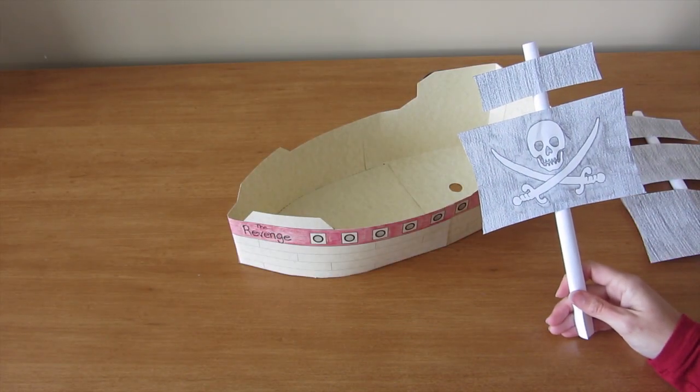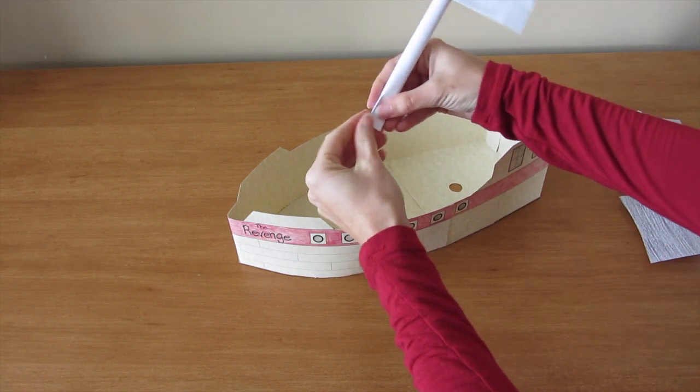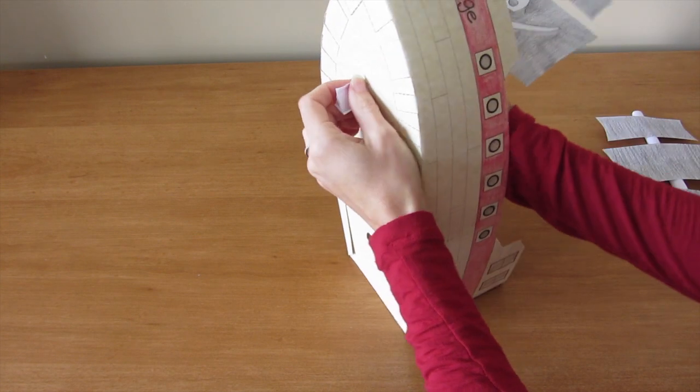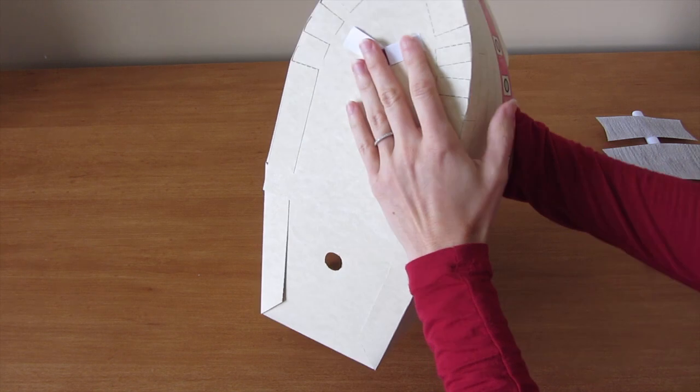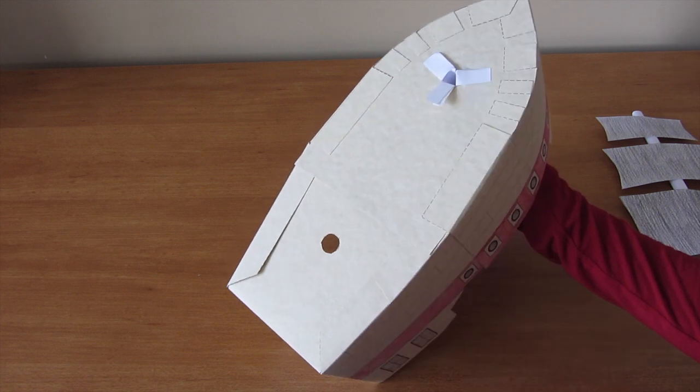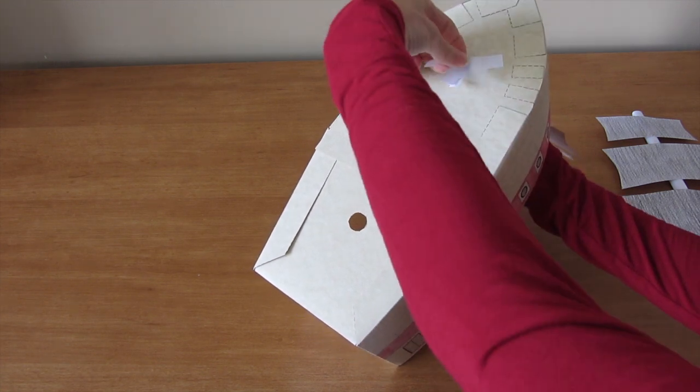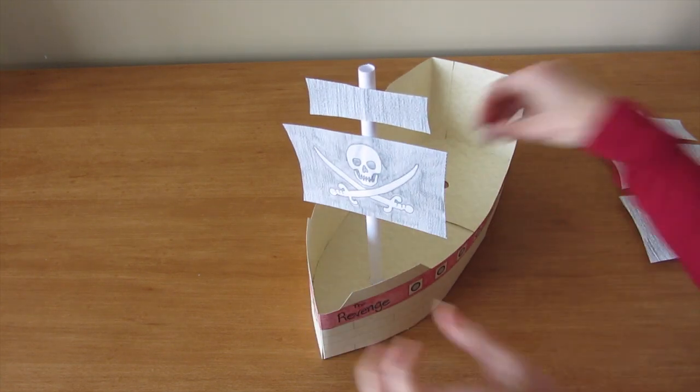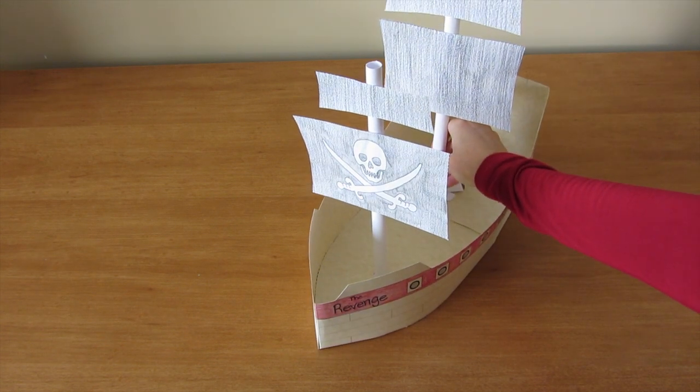The last item of business here is to attach the masts. I'm going to start with the foremast. Push these pieces back together and thread them through the hole that you made in the base of the ship. Then open them back up again and place some tape over each tab. Just like that. When you turn it over, your mast should be standing up.